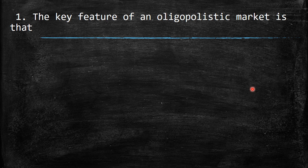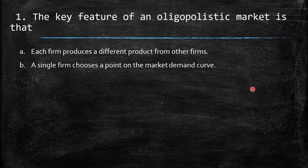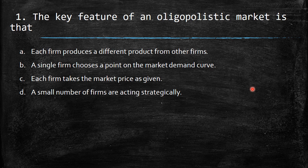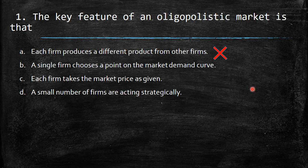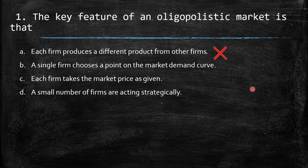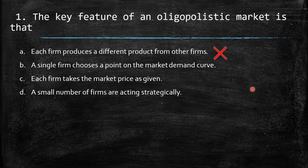The first question says: the key feature of an oligopolistic market is that? Let's try to rule out which couldn't be the correct answer. The first option is not correct because it says each firm produces a different product from other firms. When we are talking about different products, we are talking about a monopolistically competitive market, where the product is different.